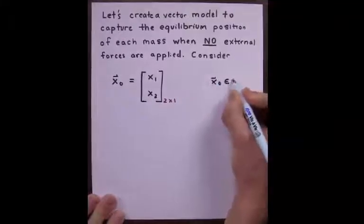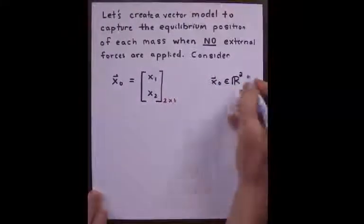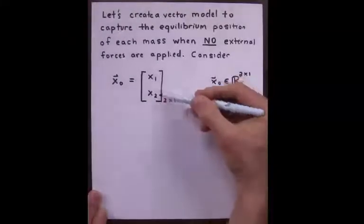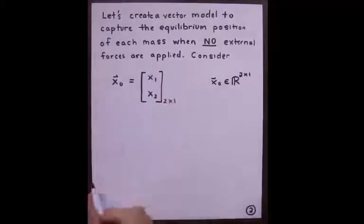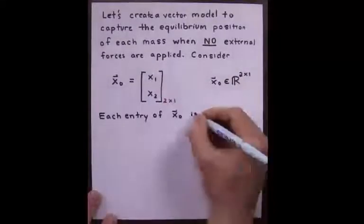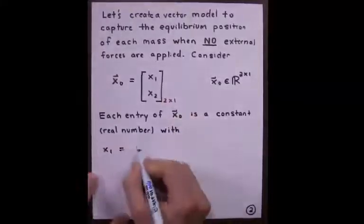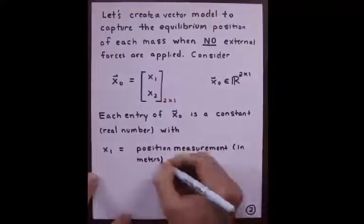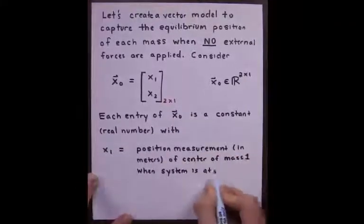We write this in notation, x naught is an element of R two-by-one, meaning it has two rows and one column. Each entry of x naught is a constant real number.